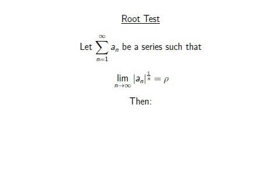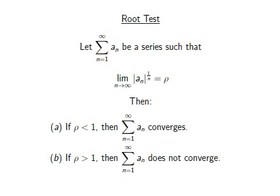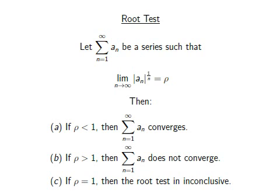We have three cases. If rho is less than 1, then the series converges. If rho is greater than 1, then the series does not converge. In the case where rho equals 1, the test is inconclusive — that means the series may converge or diverge, but we cannot tell with this particular test.